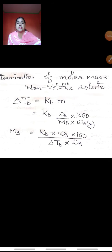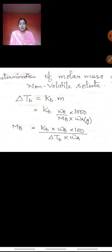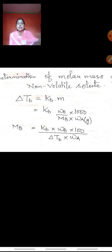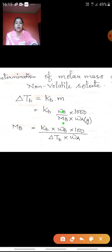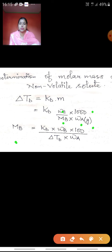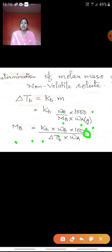For determination of molar mass of non-volatile solute: since delta Tb equals Kb into m, and molality m is number of moles of solute upon weight of solvent in kg — number of moles is WB upon MB, and weight of solvent in grams multiplied by 1000 in the numerator — the formula becomes: MB equals (Kb into WB into 1000) divided by (delta Tb into WA).